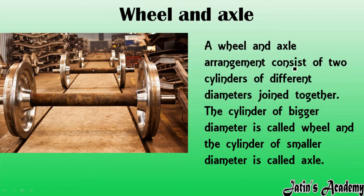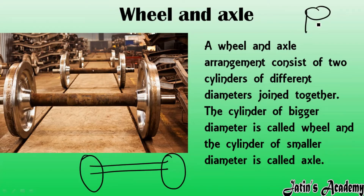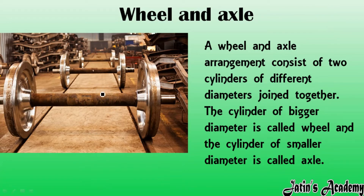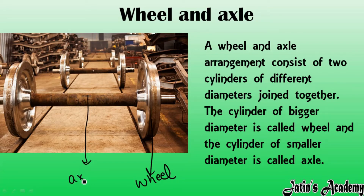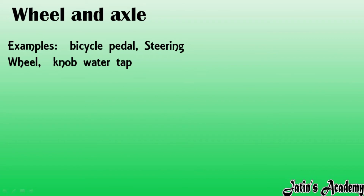A wheel and axle arrangement consists of two cylinders of different diameters. In between the two wheels one cylinder is there, and the circular path is also in cylindrical form. So in a wheel and axle arrangement we are having two cylinders but with different diameters. The cylinder of bigger diameter is known as the wheel and the cylinder of smaller diameter is known as the axle. If the definition of wheel and axle comes in the exam, you have to write it like this.